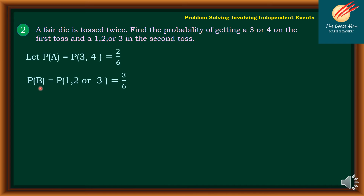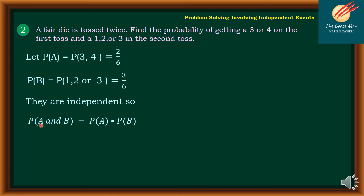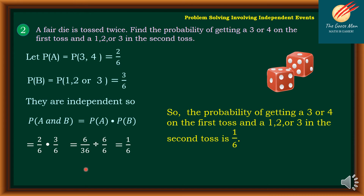The probability of B — getting a 1, 2, or 3 — is 3 out of 6. These events are independent because getting 3 is not dependent on getting 1, 2, or 3 on the other toss. So P(A ∩ B) = P(A) × P(B) = 2/6 × 3/6 = 6/36. Reducing, we get 1 over 6. Therefore, the probability of getting a 3 or 4 on the first toss and 1, 2, or 3 on the second toss is 1/6.